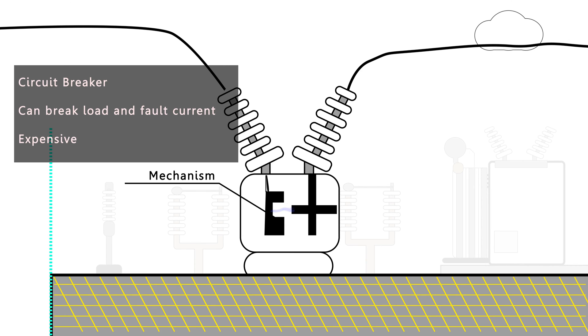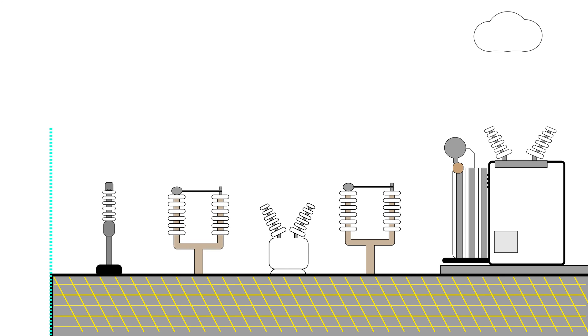Most circuit breakers have some kind of mechanism to physically pull the two connections apart and then extinguish the arc. Examples of this are air blast circuit breakers and SF6 based circuit breakers. So that's the circuit breaker. They're very expensive, but really important inside a substation.